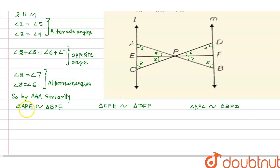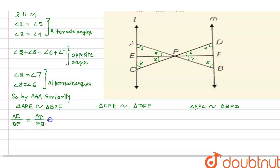Since triangle APE is similar to triangle BPF, we can say AE upon BF is equal to AP upon PB, and this is also equal to EP upon PF. Let's take this as equation one.